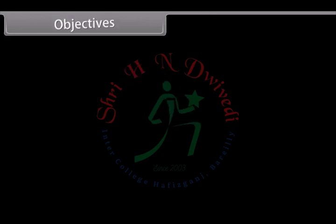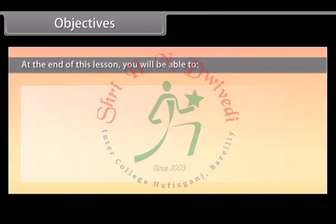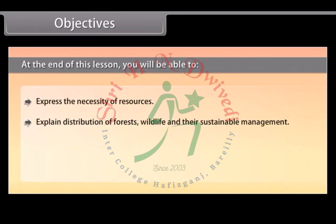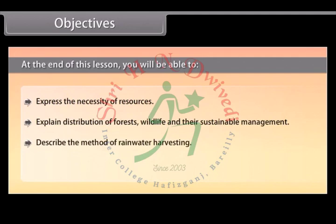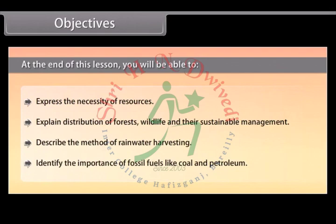Objectives: At the end of this lesson you will be able to express the necessity of resources, explain the distribution of forests and wildlife and their sustainable management, describe the method of rainwater harvesting, and identify the importance of fossil fuels like coal and petroleum.